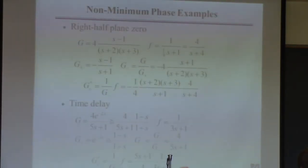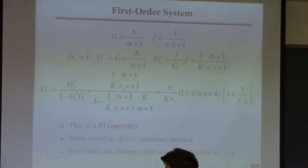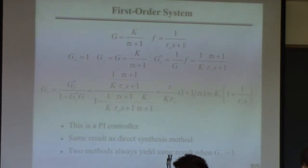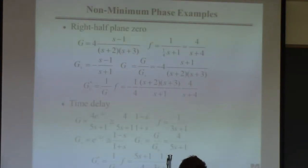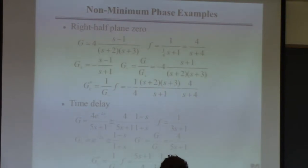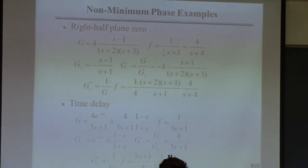If the direct synthesis method works — meaning G_plus is one, which means you have neither a time delay nor a right half plane zero — the two methods are equivalent. So if I gave you this transfer function and asked you to design a controller using either direct synthesis or IMC, you'd choose direct synthesis. It's simpler. But normally the two won't be the same. Now here's a non-trivial example. We immediately identify that we have a zero at s equal plus one — it's in the right half plane. It's a problem; we've got to get rid of it.